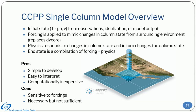The third element of the CCPP is the CCPP single column model, or SCM. The CCPP-SCM requires an initial state — temperature, moisture, and winds — taken from observations, an idealized situation, or model outputs. Forcing is applied to mimic changes in the column state from the surrounding environment, replacing the dynamics. Physics responds to changes in the column state and in turn changes the column state. The pros are that the SCM is simpler to develop, easier to interpret, and computationally inexpensive. The cons are that use of the SCM is sensitive to the forcings that drive it, and that the SCM is a necessary but not sufficient step to fully understand systematic model biases, especially in fully coupled three-dimensional NWP and Earth system models.